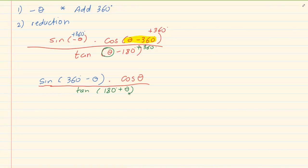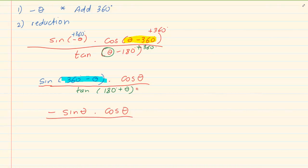Once you have changed the way the question looks, it is easier because now you have gone back to reduction. Sin of 360 minus theta: 360 minus theta is in the fourth quadrant, sin in the fourth quadrant is negative, so we have negative sin theta. Times cos theta is done. Then tan of 180 plus theta: 180 plus theta is in the third quadrant, tan in the third quadrant is positive, so we have positive tan theta. We will come back and complete this question after we do identities.